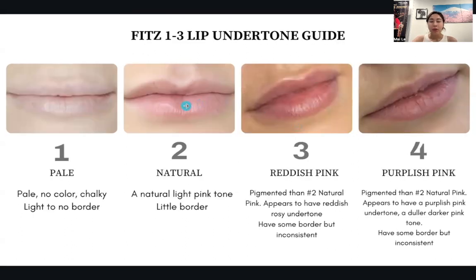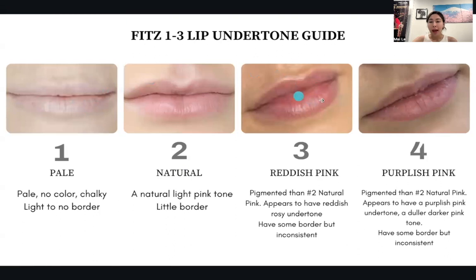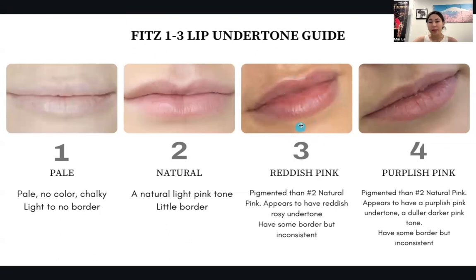For example, if you apply a lip color on number three lips it's going to show less than on number one, because number one is so pale. This helps you choose how intense you want the color to be. For people who already have pigment on their lips, you need to increase the intensity of your color so that when it heals it will show — because applying a light color on already-pigmented lips won't show.